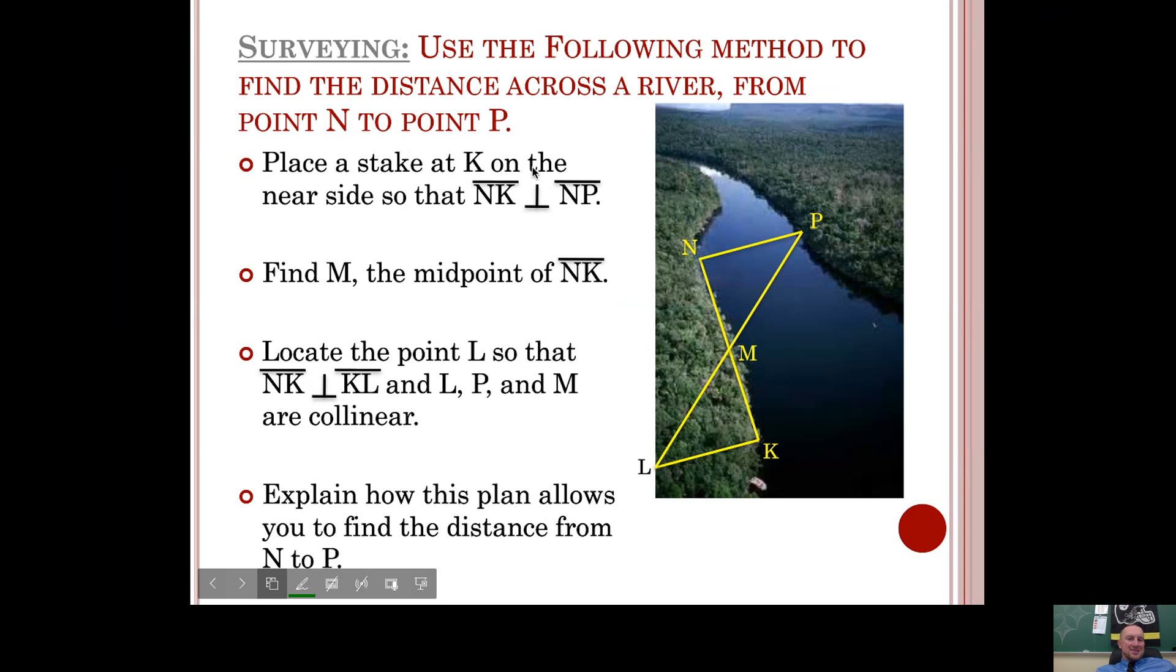If you place a stake at point K on the near side of this bank so that segment NK is perpendicular to segment NP, you can set that up. We can find the midpoint of segment NK, that would be this guy. So if that's the midpoint, then we know these are congruent. We're going to locate point L so that segment NK is perpendicular to segment KL, so we know that's a right angle as well.